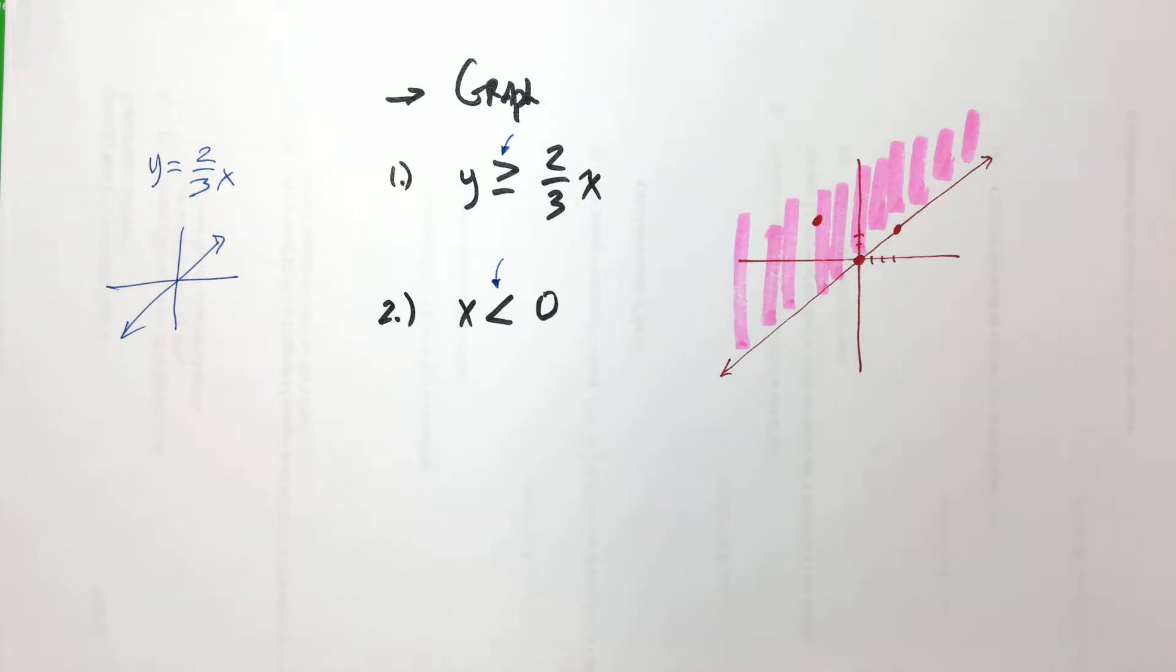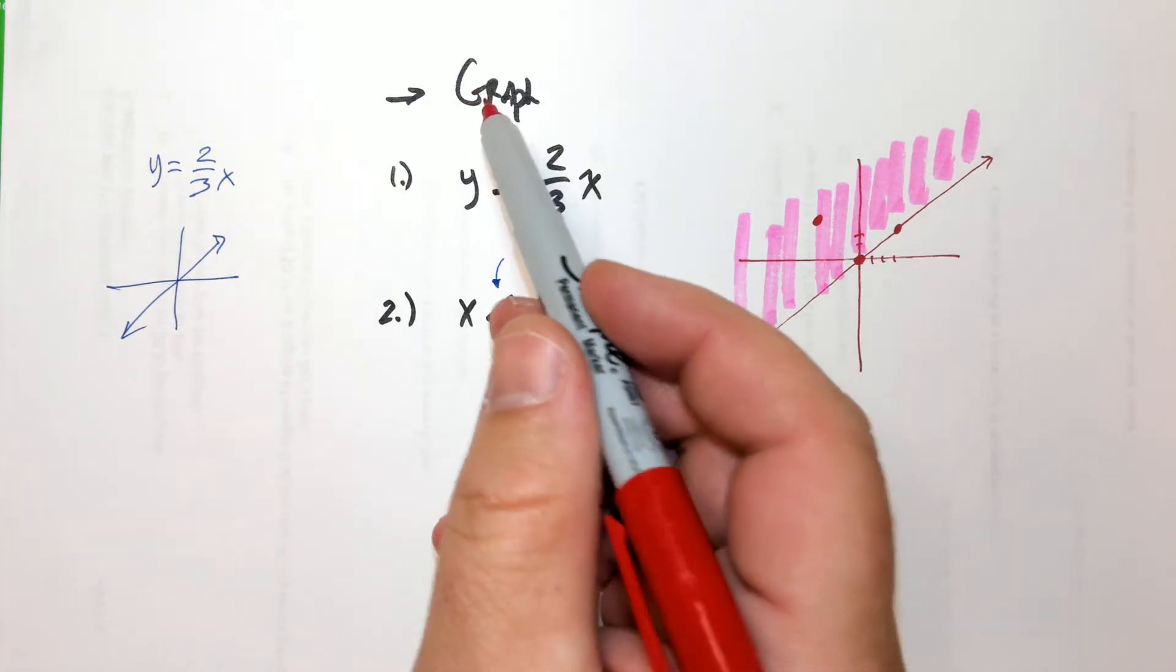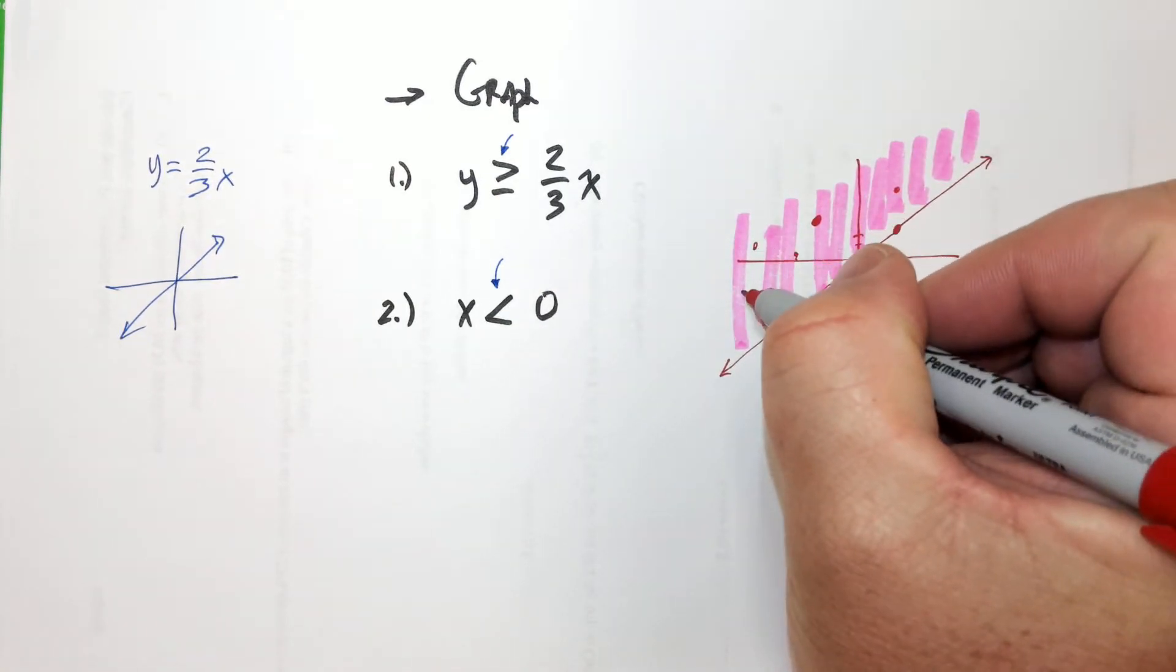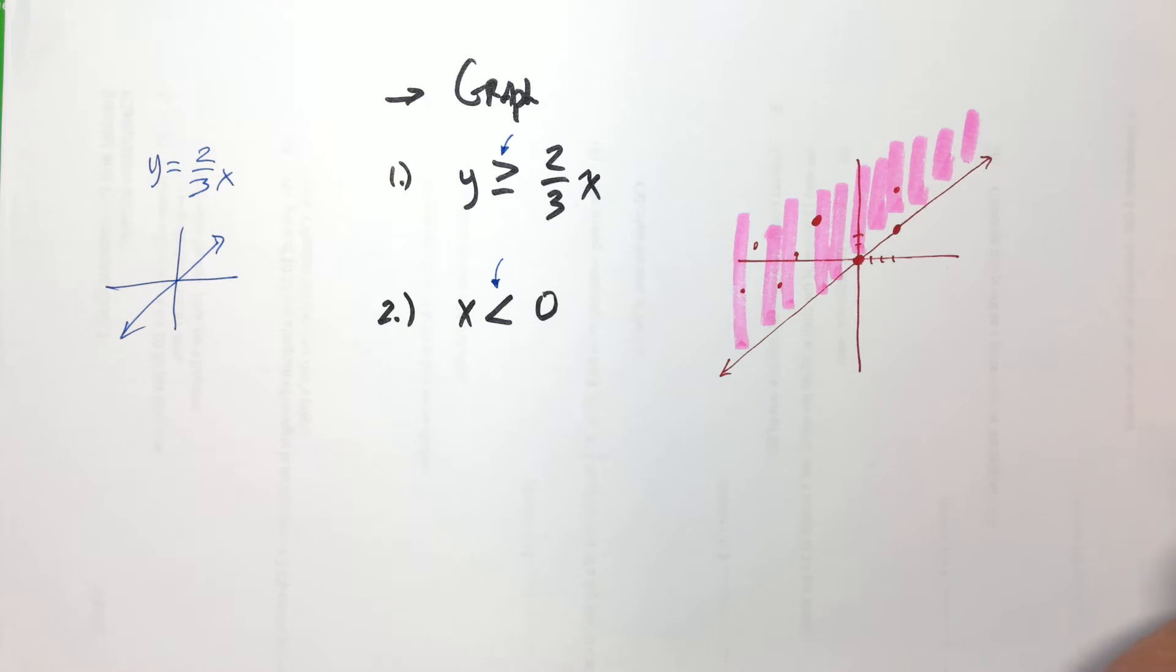So it's not because it has an equal to sign? Well, it's kind of a consequence of that, but the shading itself is a picture. Like a graph is a picture of all the answers, so every single point, all of these points are all answers.